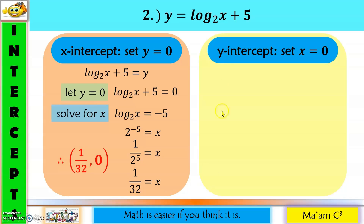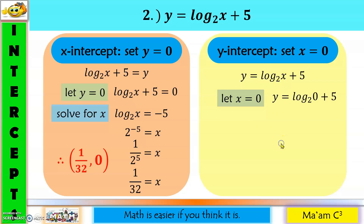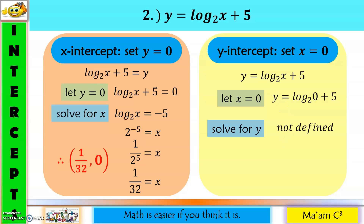For the y-intercept of the second example, set x equal to zero. The argument must be greater than zero, but here the argument equals zero, so our logarithm is not defined. Therefore, we do not have a y-intercept.